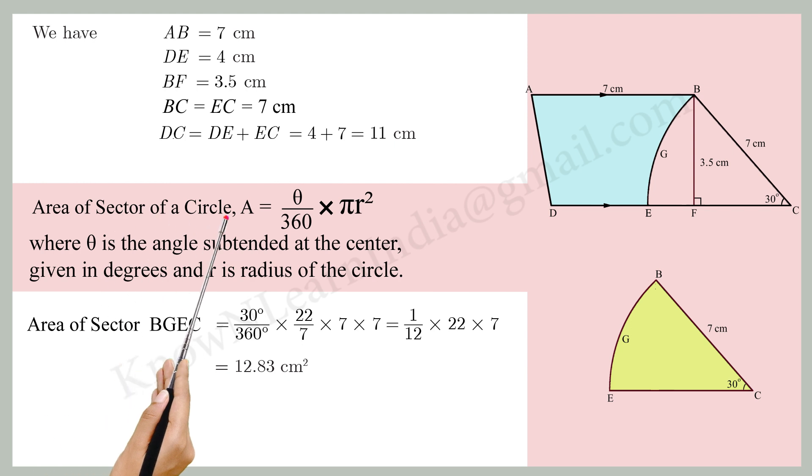Area of a sector of a circle A equals theta by 360 times pi R squared, where theta is the angle subtended at the center given in degrees and R is the radius of the circle.